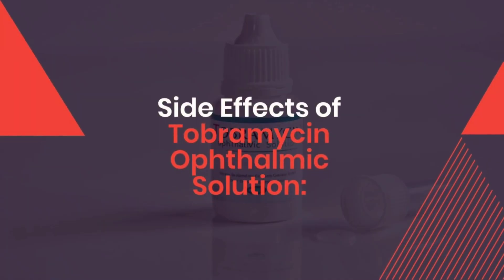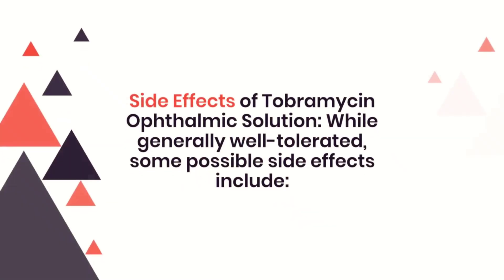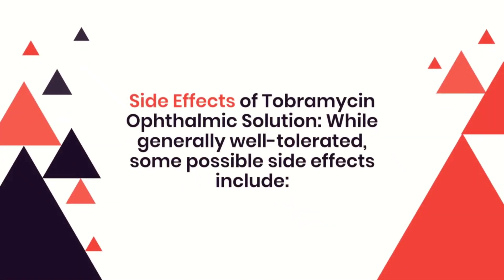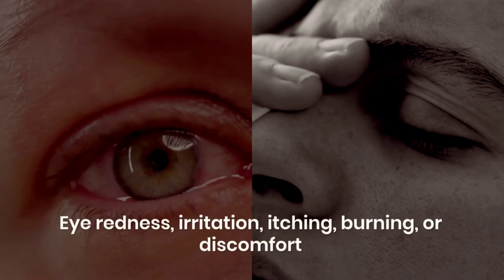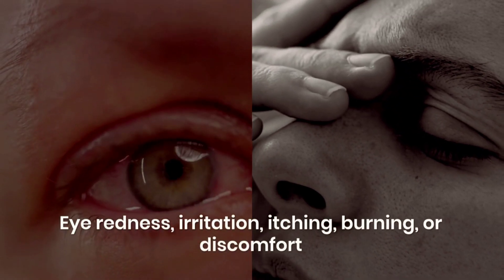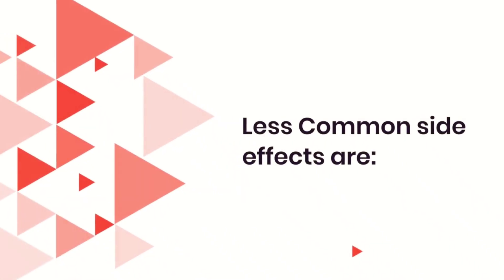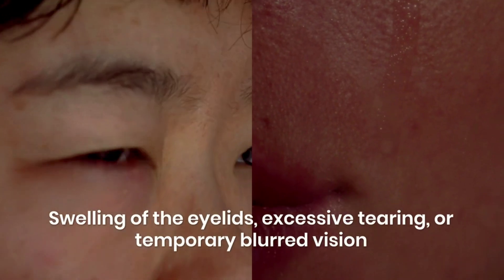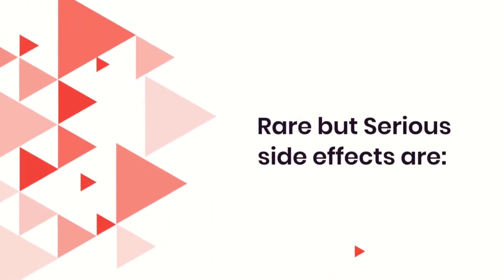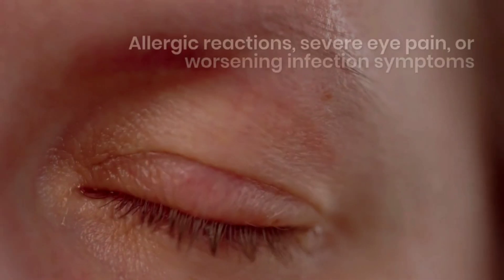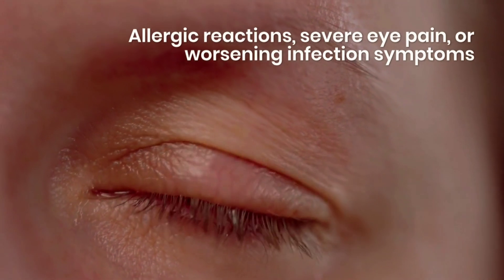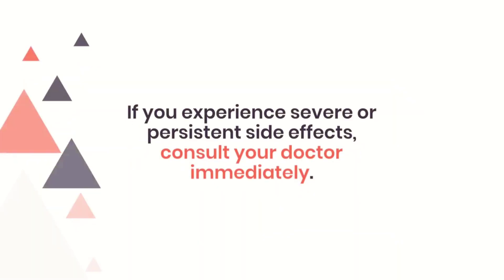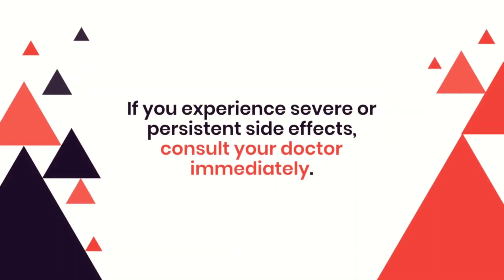Tobramycin is generally well tolerated, but some side effects may occur. Common side effects include eye redness, irritation, itching, burning, or discomfort. Less common side effects include swelling of the eyelids, excessive tearing, or temporary blurred vision. In rare cases, serious side effects such as allergic reactions, severe eye pain, or worsening infection symptoms may occur. If you experience severe or persistent side effects, seek medical attention immediately.